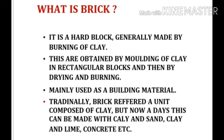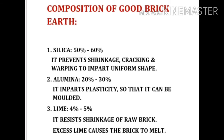Composition of good brick earth: Number one, silica — a good brick earth should contain 50 to 60 percent of silica. It prevents shrinkage, cracking, and warping, and thus imparts uniform shape. Number two, alumina — 20 to 30 percent. It imparts plasticity so that the clay can be molded.